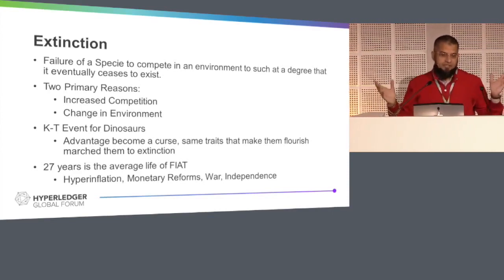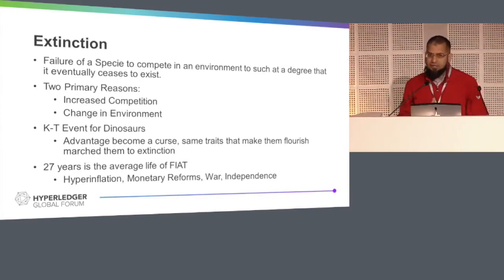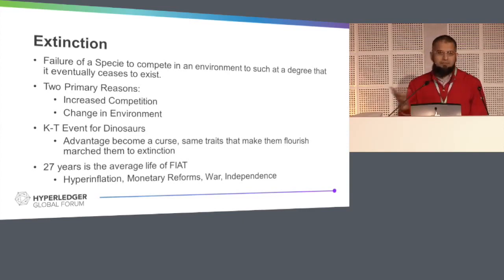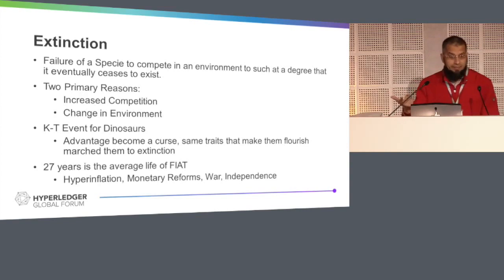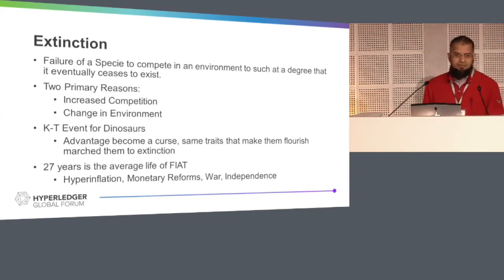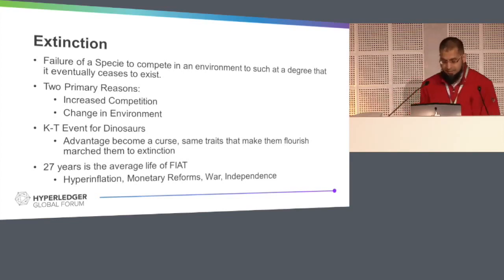Two primary reasons for extinction: increased competition and change in environment. We clearly see increased competition in the blockchain domain, in fintech, and a change in environment as well. The average life of a fiat currency is 27 years. Mainly, currencies go extinct because of war, because of independence, new countries, monetary reforms, and hyperinflation. We have the cases of Venezuela, Zimbabwe, Greece recently, and India's demonetization as well.